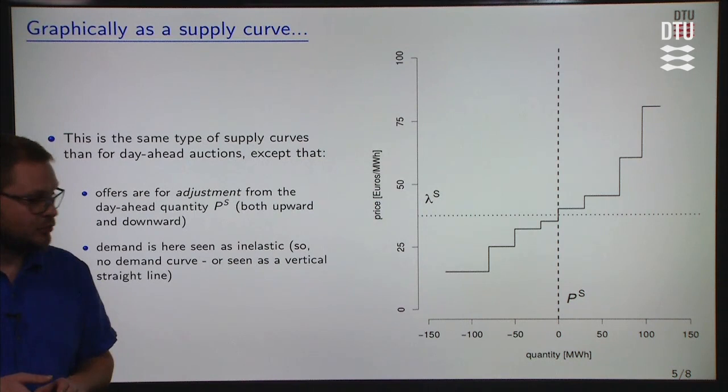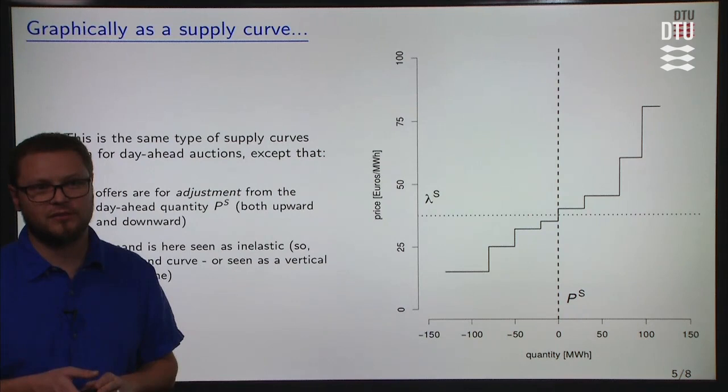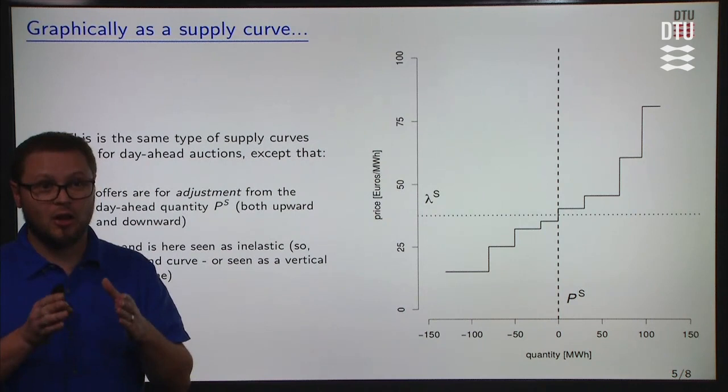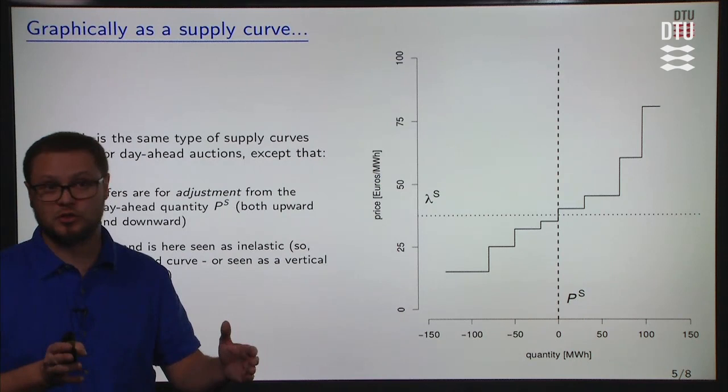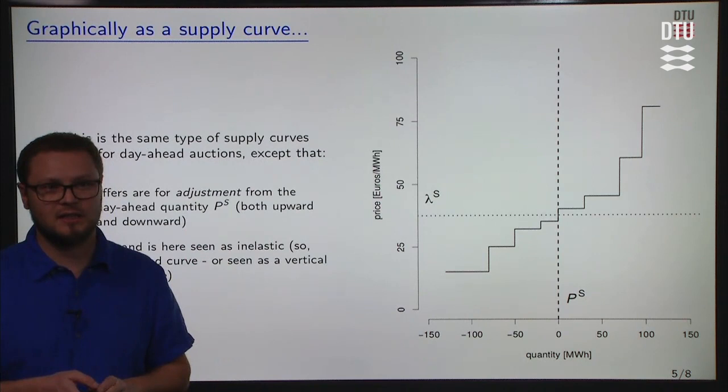The demand that appears on this graph is a vertical line — the demand is not elastic. There is a single amount needed by the system operator, who observes a certain imbalance delta p, and this is the amount the system operator needs to buy, either for upward or for downward regulation.